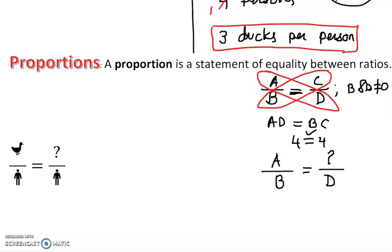Let's have an example. One man can catch 15 ducks — five men will catch how many ducks? Now, some of you might notice that since the men went from one to five, you can just multiply the ducks by five as well: 15 times 5 gives 75. That's mental thinking, and it works.